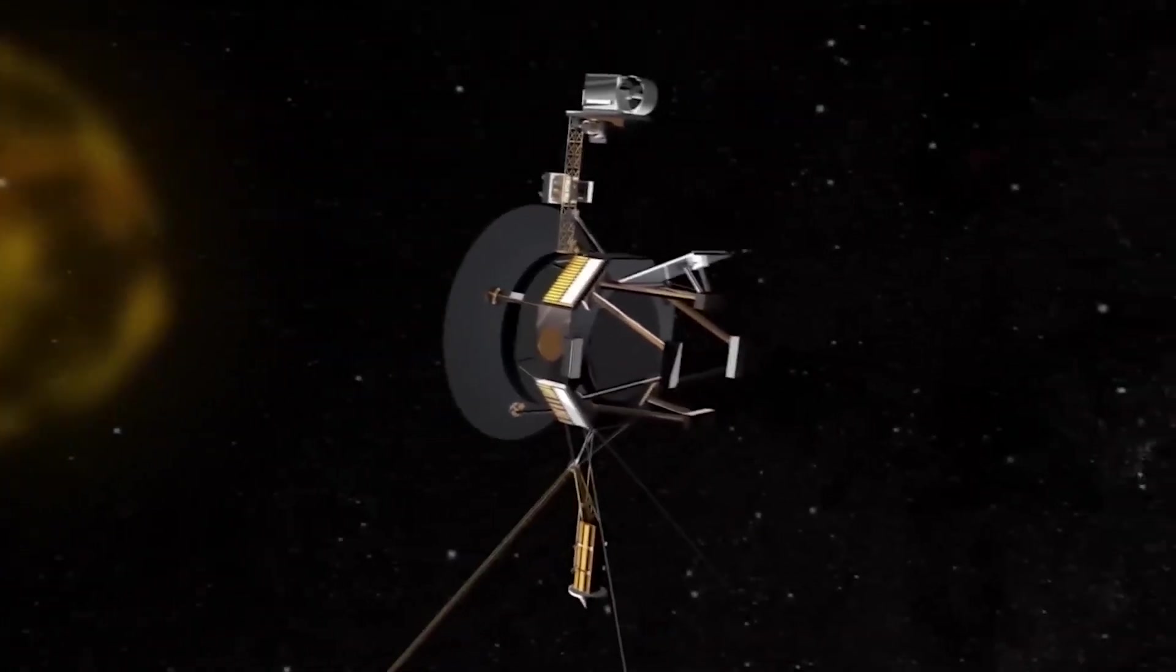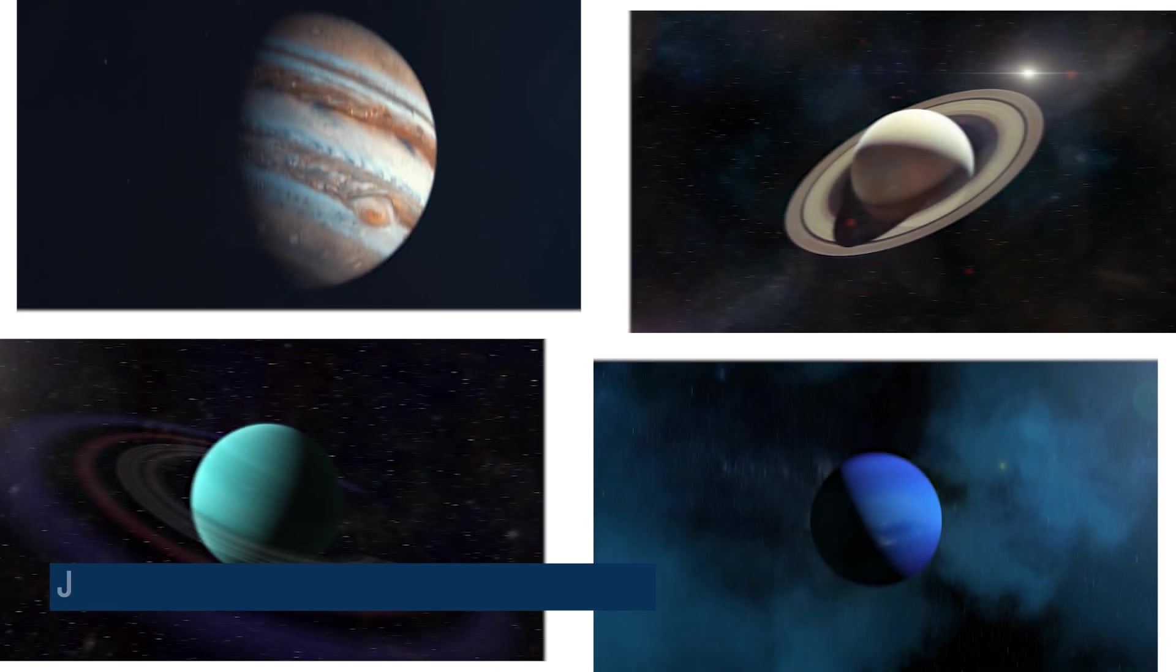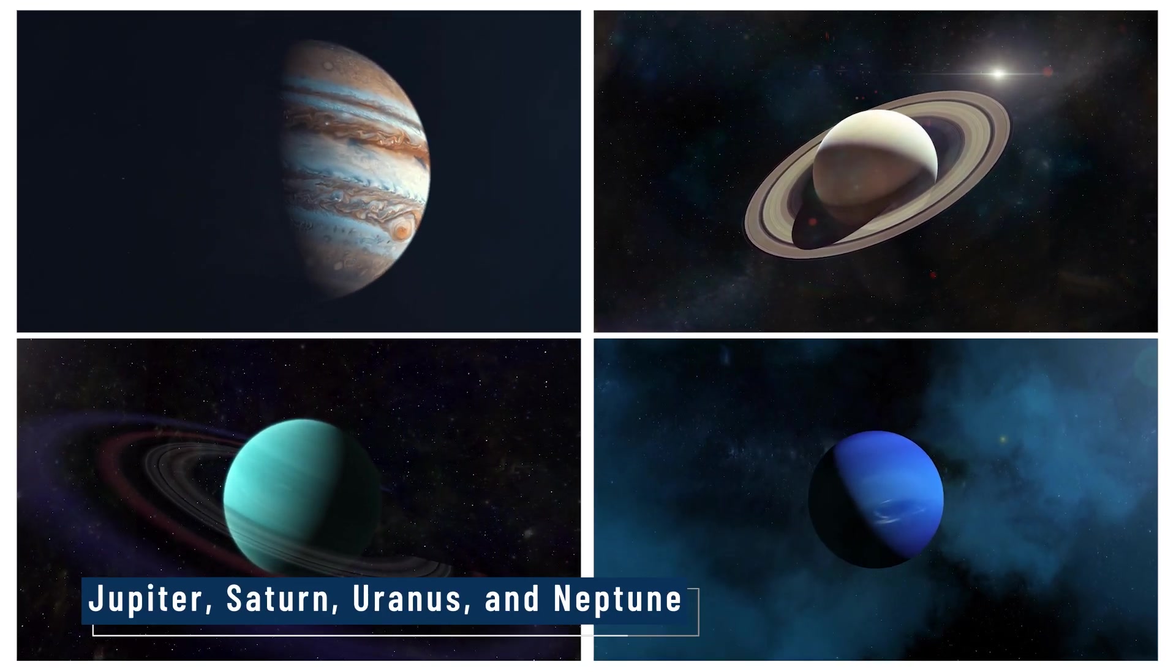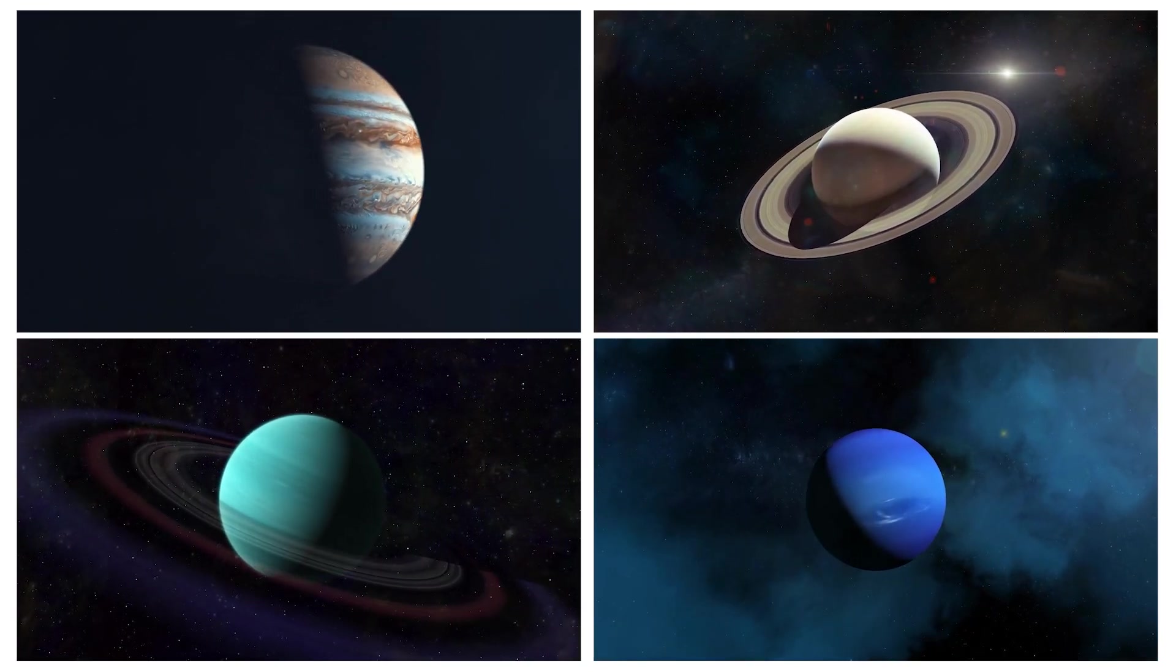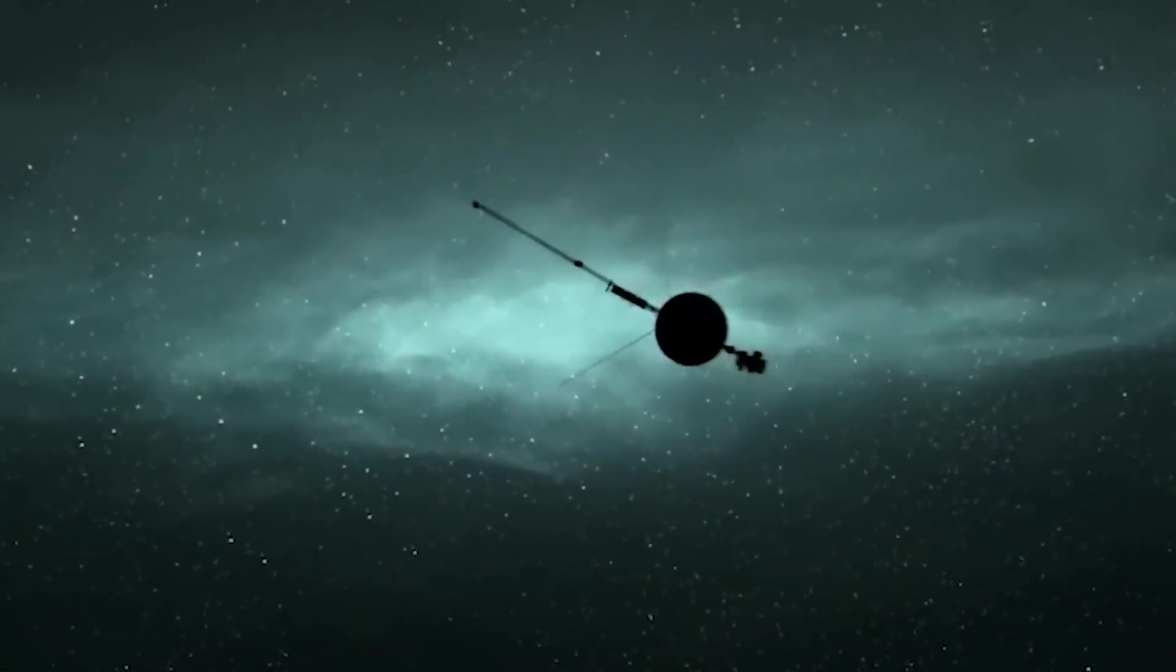Unlike its sibling, Voyager 2 had the unique mission to visit all four gas giants: Jupiter, Saturn, Uranus, and Neptune, becoming the only spacecraft to do so. Each planetary encounter brought groundbreaking revelations.